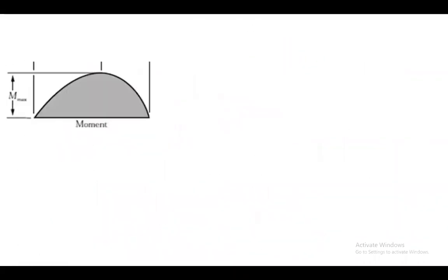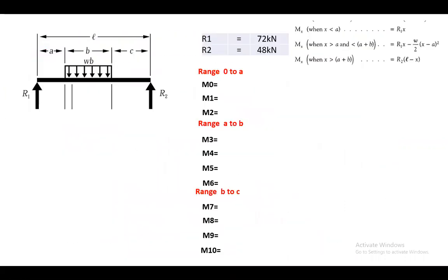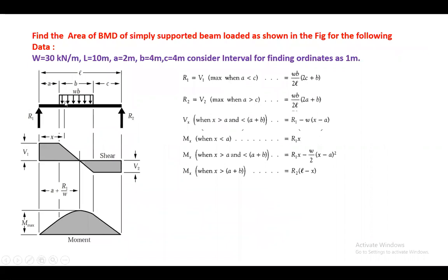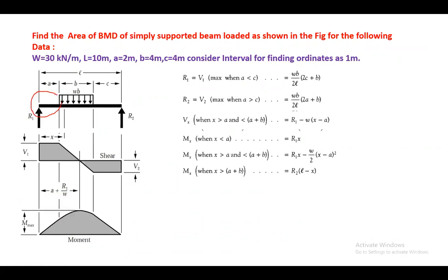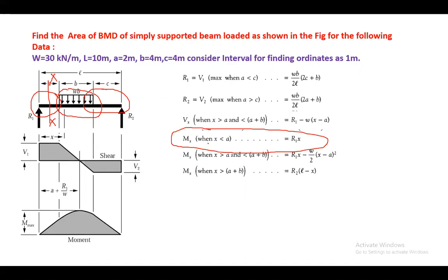In the present problem, the load exists only in a certain region, so the sections are different. You need to take three sections. For the first section between 0 to A, there is no load, so the bending moment at X is simply M(X) = R1 × X.